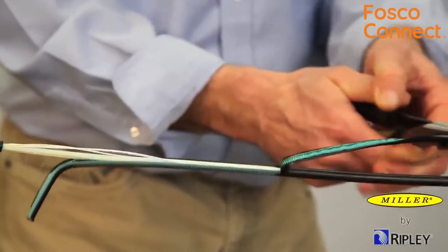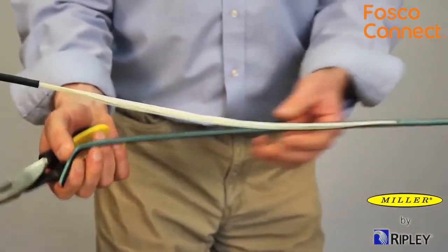Using Ripley long nose pliers, carefully peel back the jacket and armor to access the fiber.